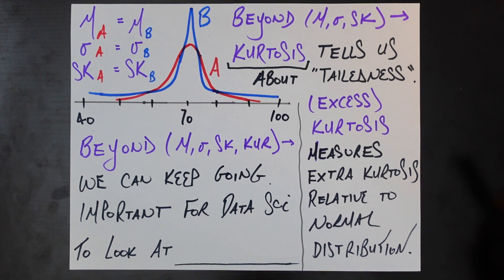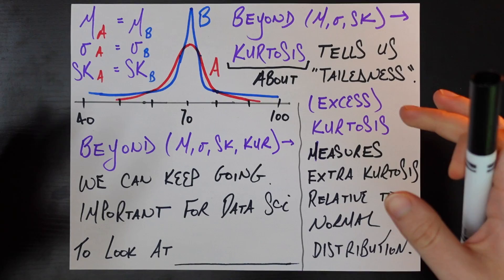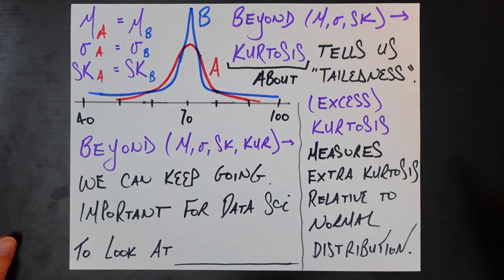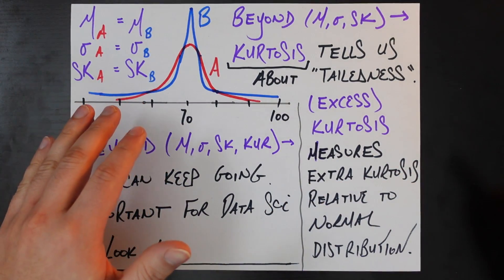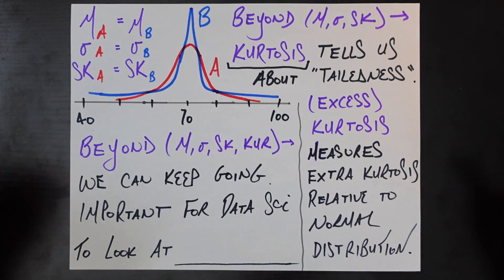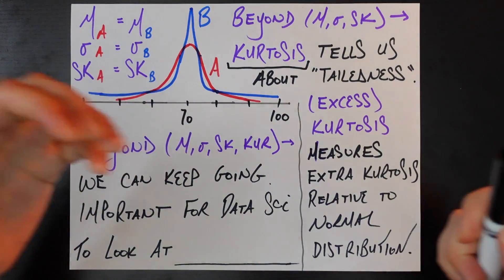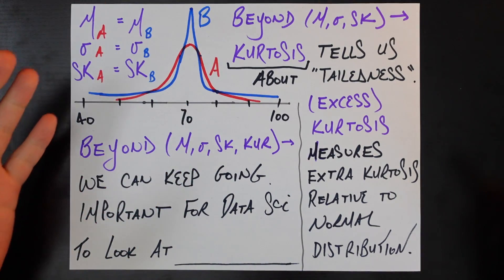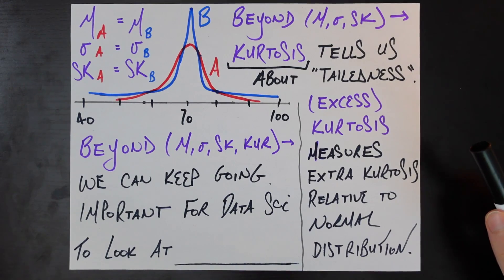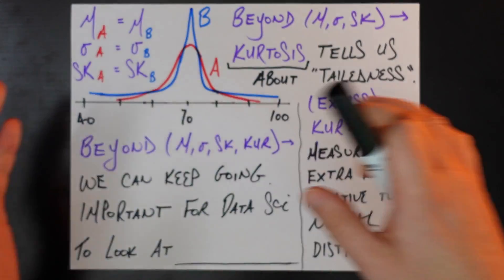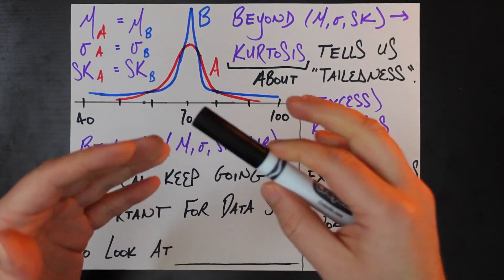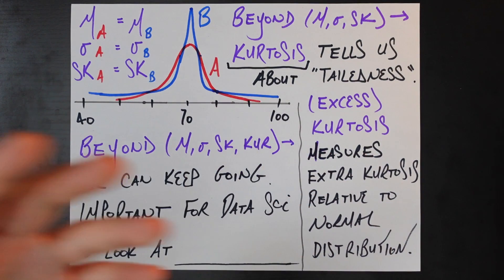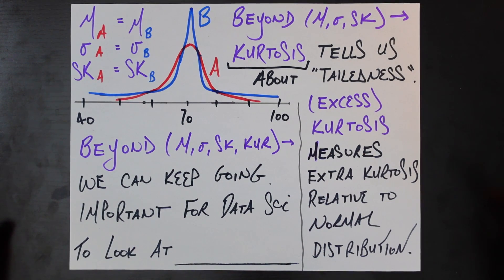And finally, talking about kurtosis tells you whether there are outliers relative to last year — are there some Americans who are earning less and able to spend less, signaling some kind of problem in the population? And are there some Americans who are able to spend a lot more? Could be a story about economic growth helping the middle class earn more, or maybe a story about billionaires just getting richer. Kurtosis would tell you about that.